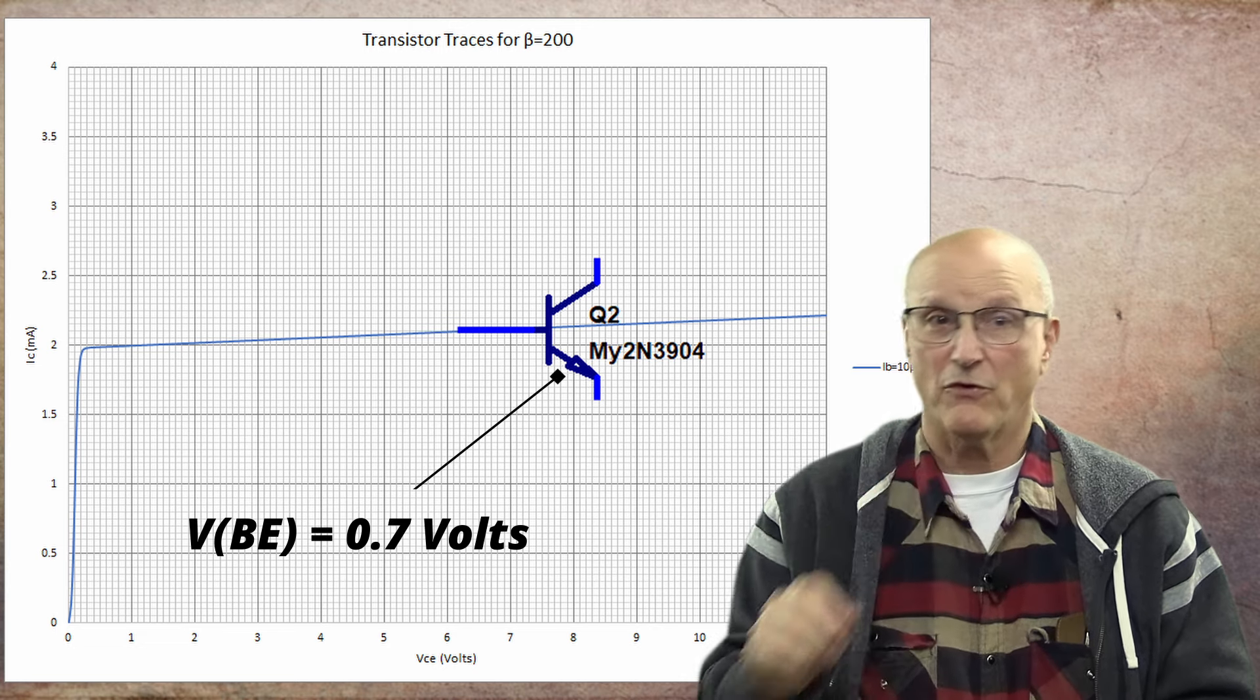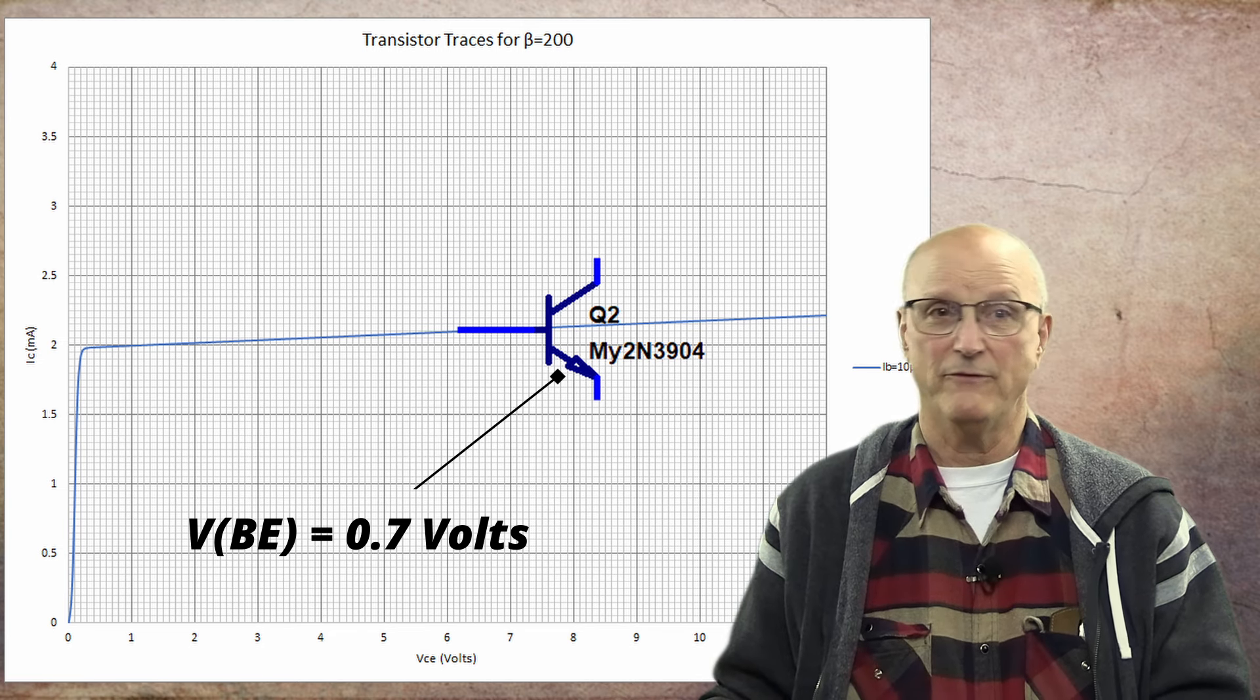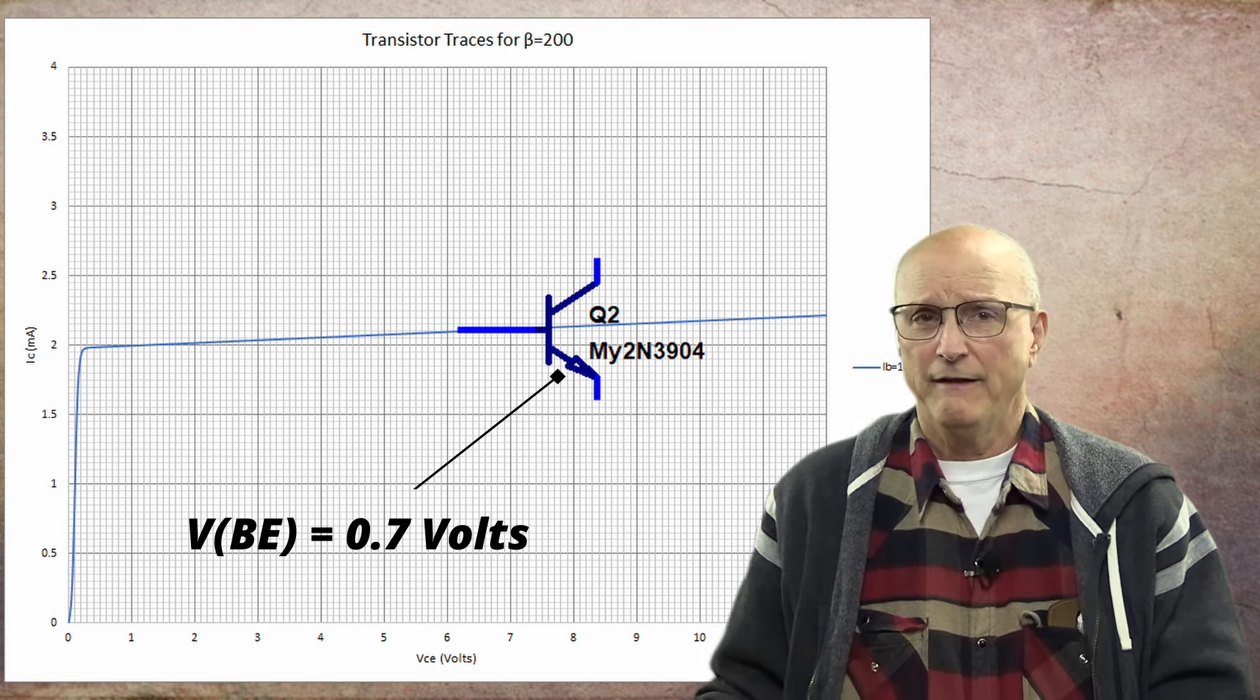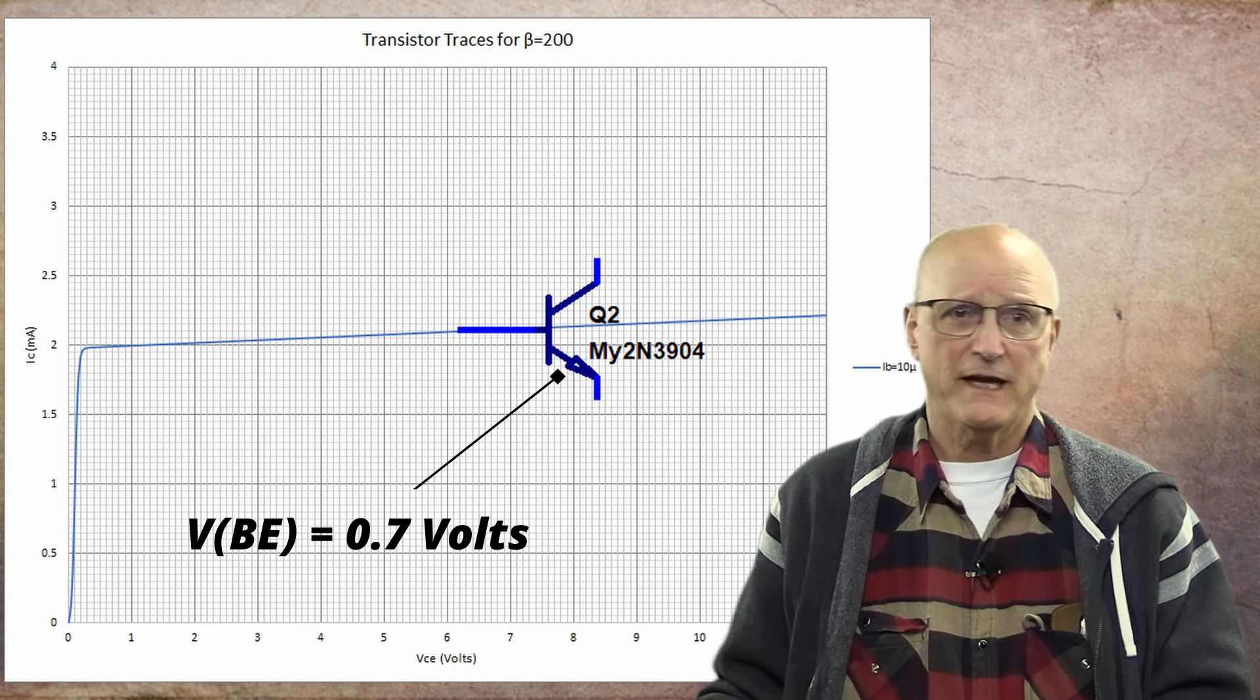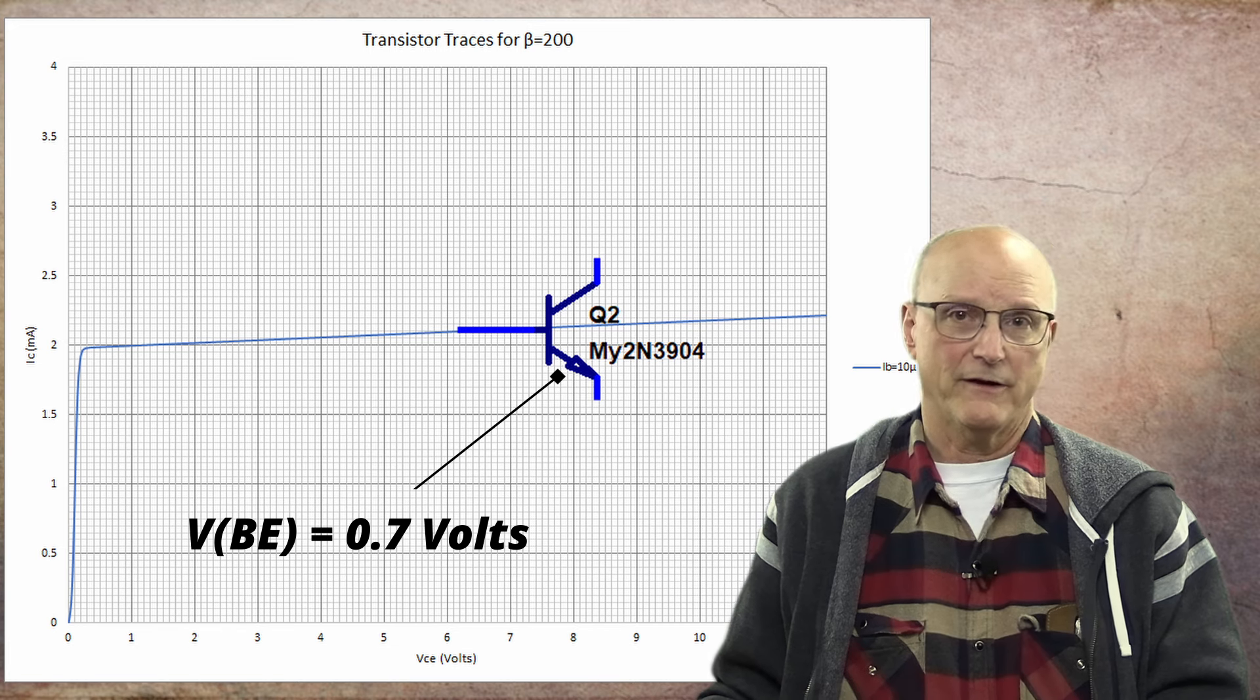The reality is, the actual base emitter voltage varies with base current, but for the sake of the standard model and our discussion, I will stick with the ideal base emitter voltage of 0.7 volts.